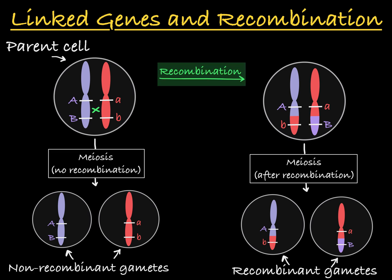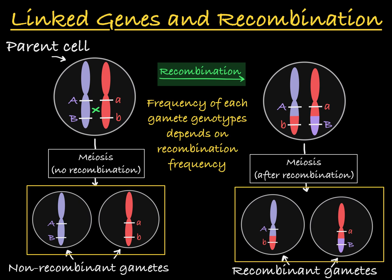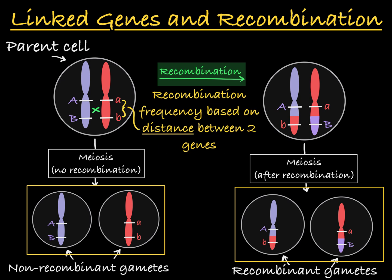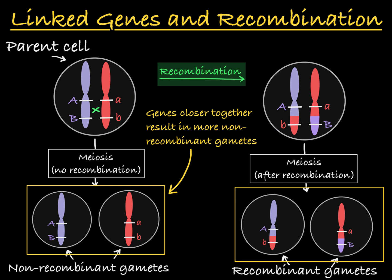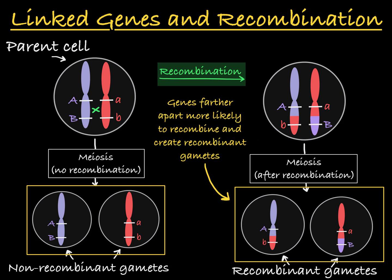So how often do linked genes get passed on together? That depends on the recombination frequency between the two genes — how often these genes are separated via crossing over in meiosis. Recombination frequency is more or less based on the distance between the two genes. The closer together these genes are, the more likely they are to be inherited together. The further apart they are, the more likely they are to be separated via crossing over in meiosis, creating gametes in which allele combinations on the chromosomes are different from the parent genotype.